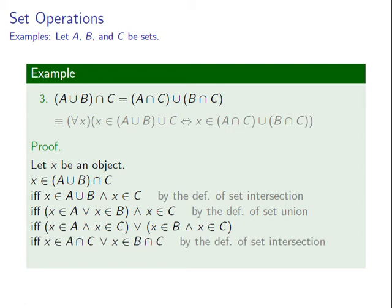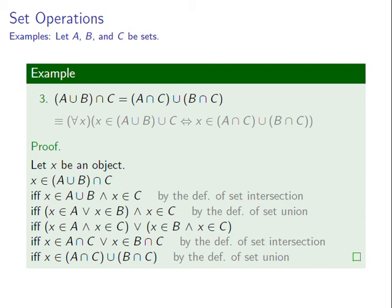The first statement in the disjunction is equivalent to the condition x is an element of A intersection C. The second statement is equivalent to the condition x is an element of B intersection C. This is equivalent to the condition x is an element of the union of A intersection C and B intersection C, which completes the proof.